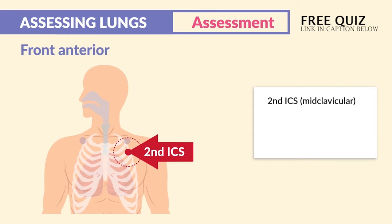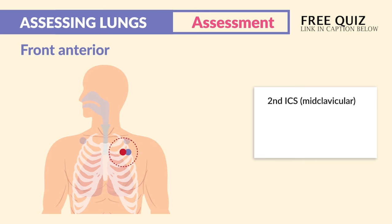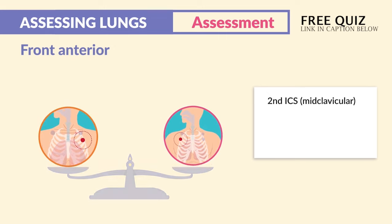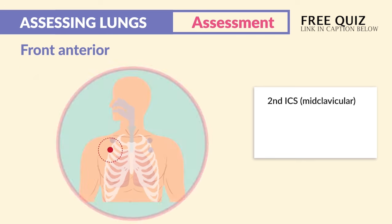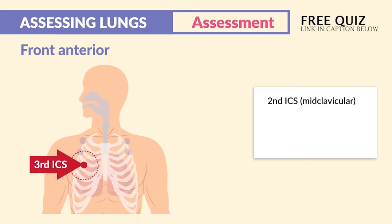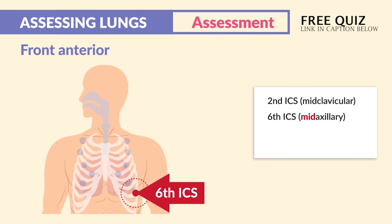Move to the second ICS mid-clavicular — meaning the middle of the clavicle — where ICS is the intercostal space between the ribs. Then move to the opposite side and compare the quality, depth, and adventitious breath sounds. Continue this pattern down to the third intercostal space and compare, all the way down.